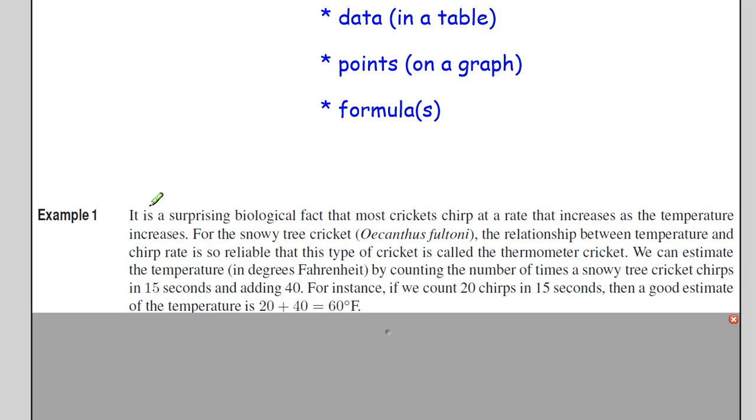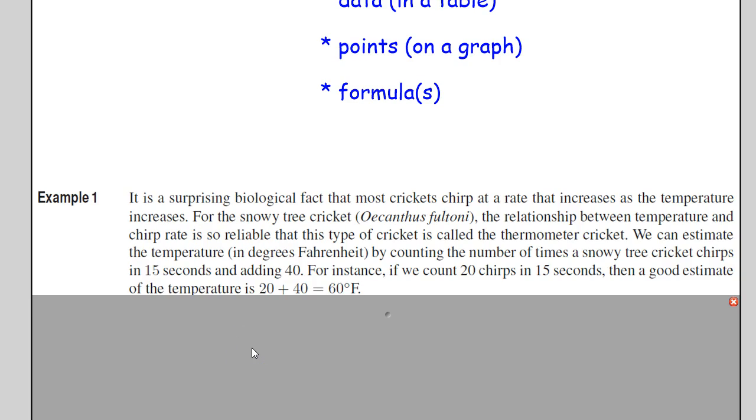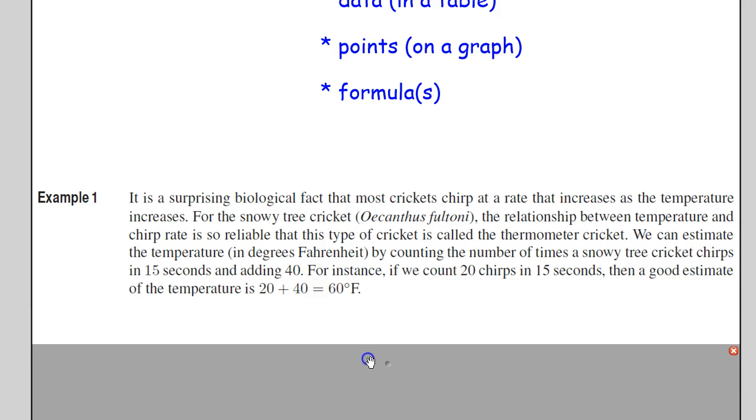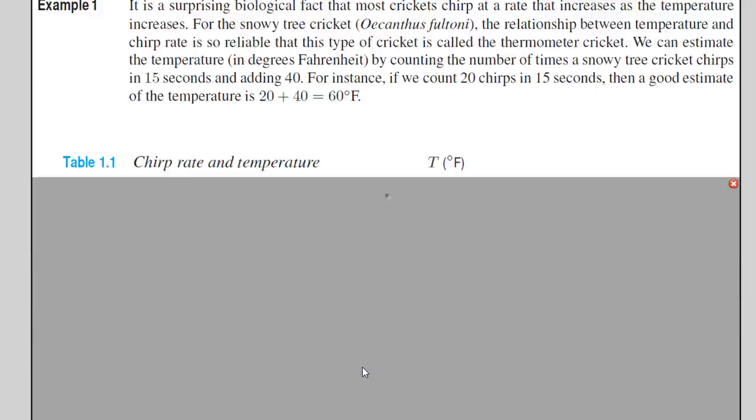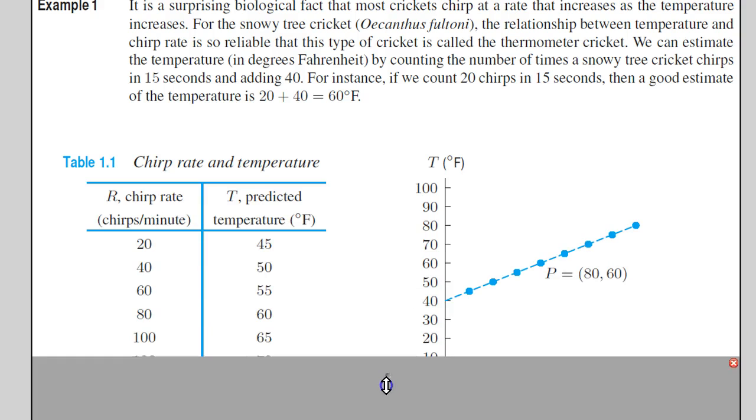Crickets are these little animals, and they make noise, and their noise is called chirping. The more number of chirps that they make is based off of the increase in temperature around them. A way to determine the temperature around this cricket is to measure the number of chirps. Here we have multiple representations of that relationship.